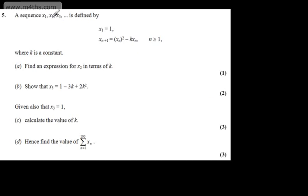This is question number 5. We're told that sequence x₁, x₂, x₃ and so on is defined by x₁ = 1, x_{n+1} = x_n² − k·x_n where n is equal to or greater than 1, and k is a constant.